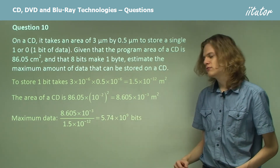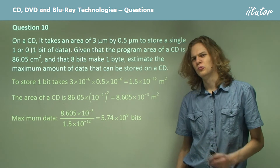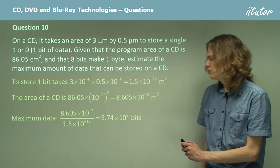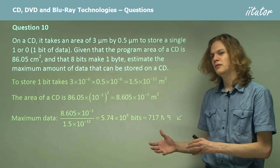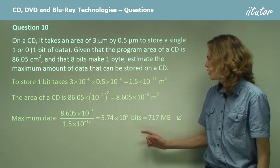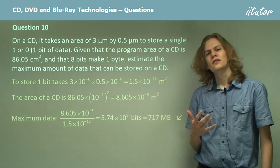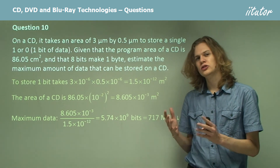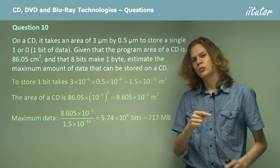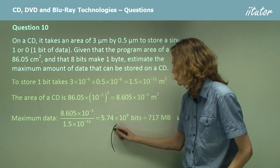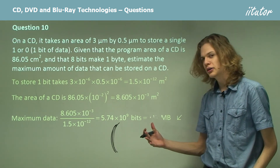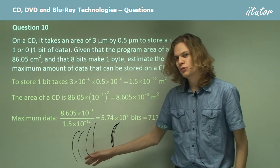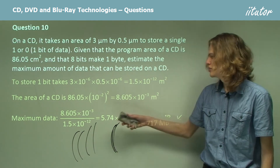We don't work in bits — we work in bytes, kilobytes, and megabytes. Dividing by 8 gives bytes, and dividing by a million gives megabytes: about 717 megabytes. In reality, this is slightly more than can actually be stored on a CD. When data is stored on a CD, it sits in a spiral groove, and there must be a gap between successive lines of that groove — the CD player can't tell them apart otherwise. This separation is why we can't actually store 717 megabytes on a CD.